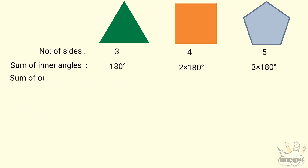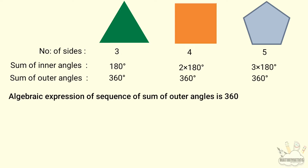Now we consider the sum of outer angles. The sum of outer angles is always 360 degrees — for the triangle, the square, the pentagon, and all regular polygons. So the algebraic expression for the sum of outer angles is 360, a constant.